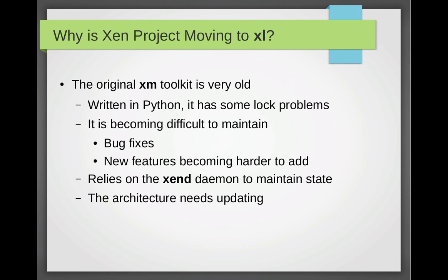The first question is: why XL? XM has been here for 11-plus years and it's worked admirably, but it was written in Python and has a history of locking problems under certain circumstances. It's also becoming crufty — hard to fix bugs and new features are really tricky to add. It also relies on having the Xend daemon, which maintains state — things like whether the VM is up, down, or even exists — held in a daemon rather than something closer to the vest. Architecturally it's felt to be a little on the old side, and from a functional standpoint it's getting harder and harder to maintain.